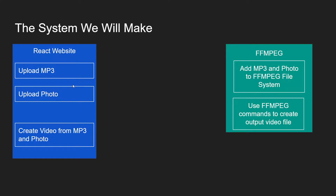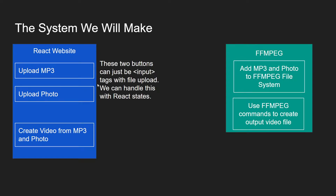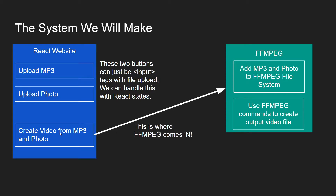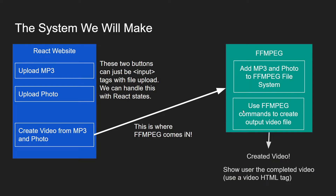Let's get into the system we're going to make. We're going to make a React website with an upload for an mp3 and an upload for a photo. These two buttons can just be input tags with file upload, and we can handle the content of what gets uploaded using React states. When we press 'create video from mp3 and image,' that's where the ffmpeg logic comes in. We want to add the mp3 and photo to our ffmpeg file system, then use ffmpeg commands to create the output video file. After that, we'll show the user the completed video using a simple HTML video tag.